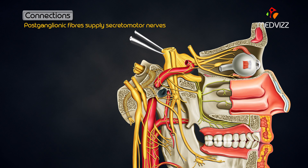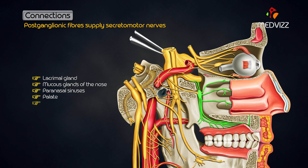Postganglionic fibers arise in the ganglion to supply the secretomotor nerves to the lacrimal gland and to the mucous glands of the nose, the paranasal sinuses, the palate and the nasopharynx.